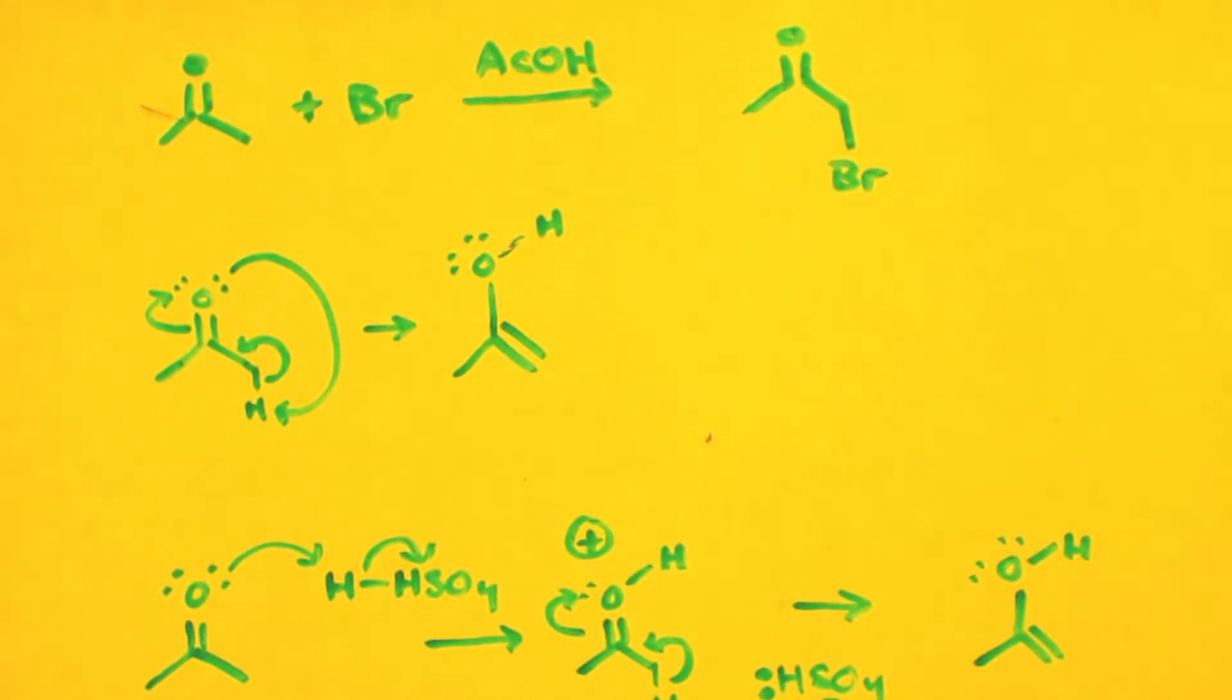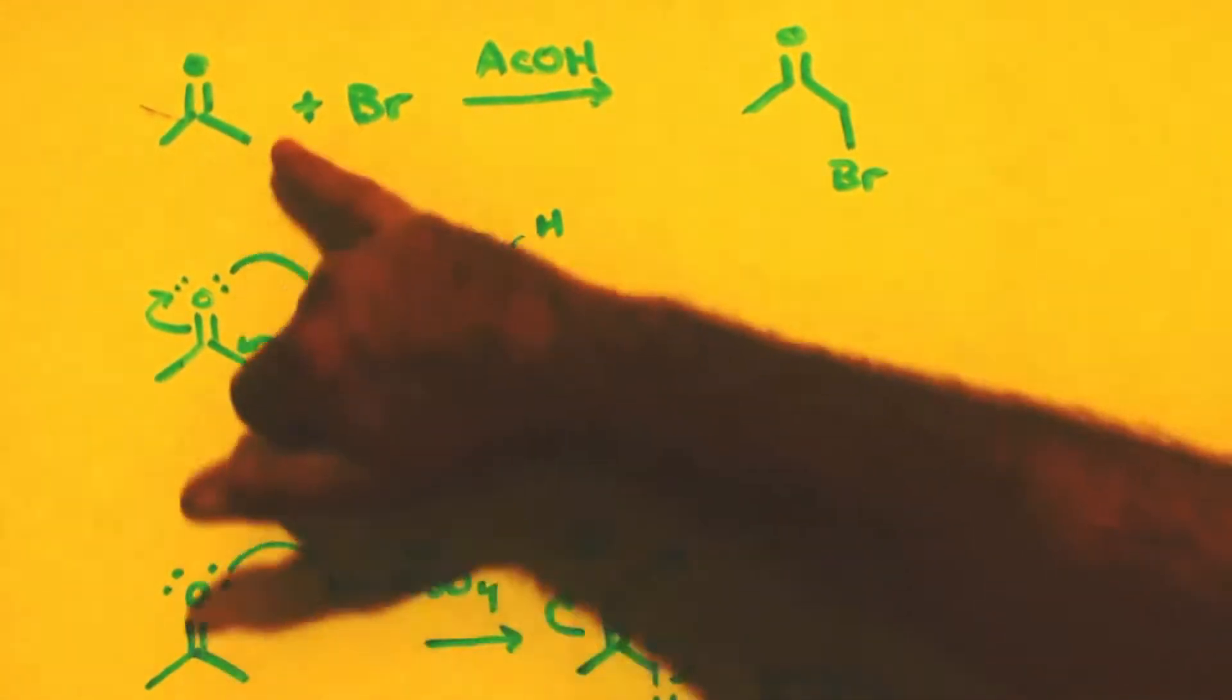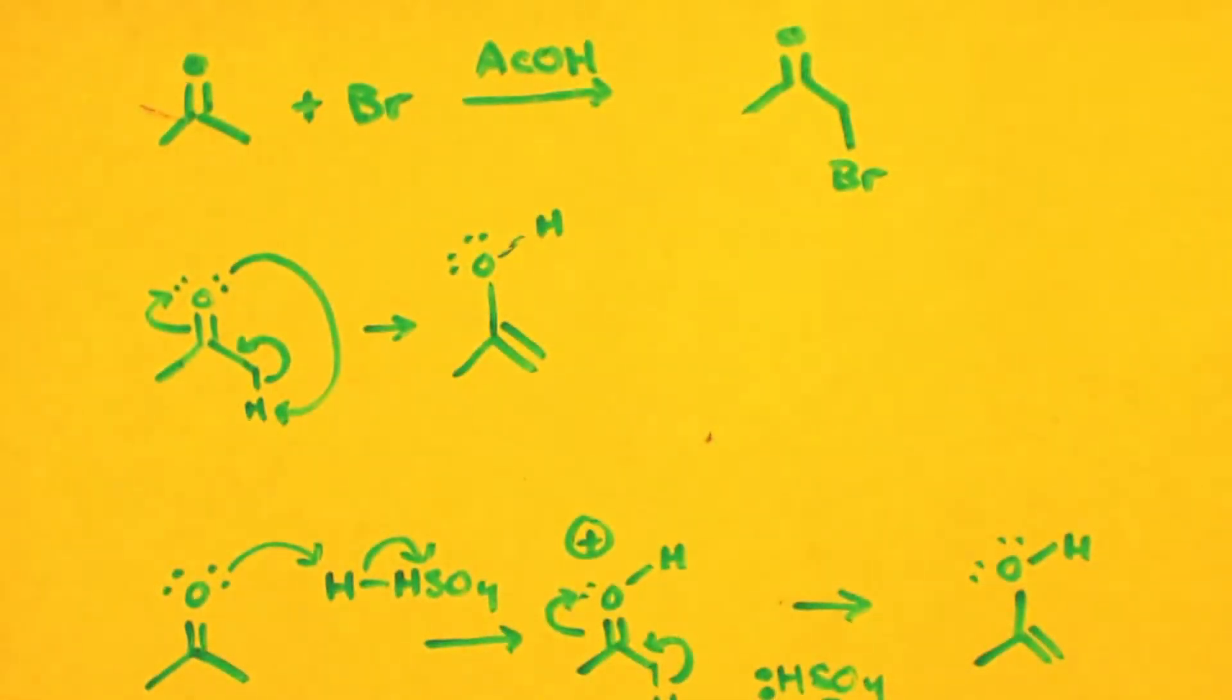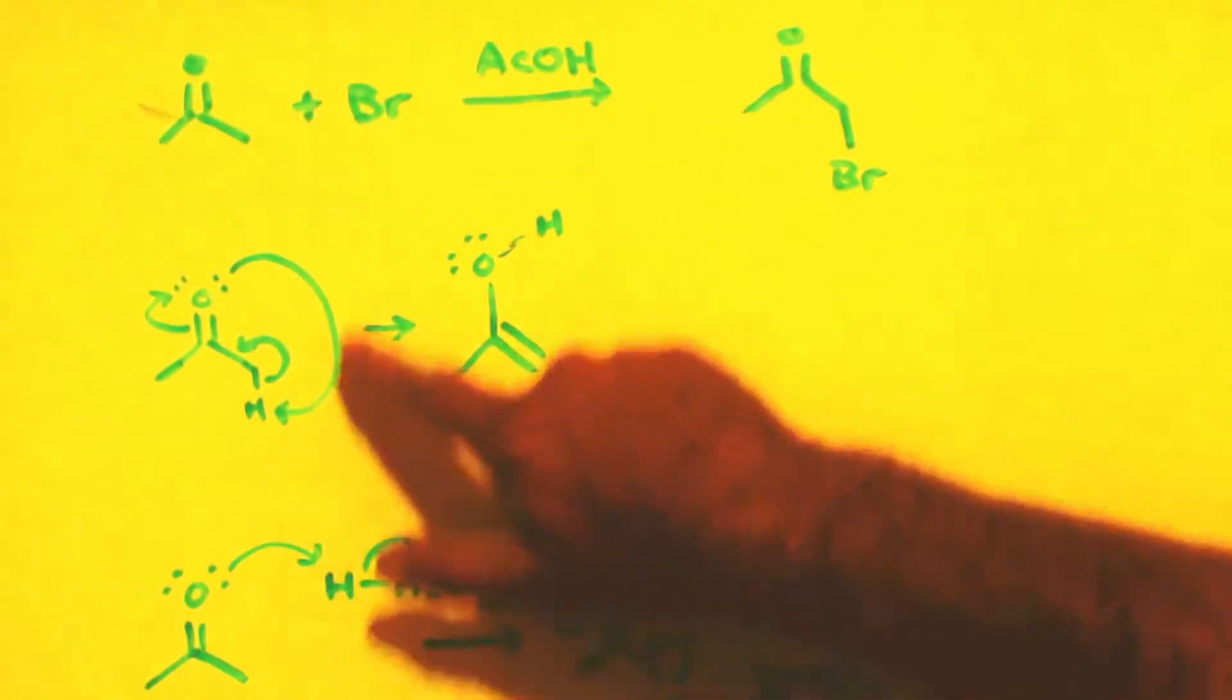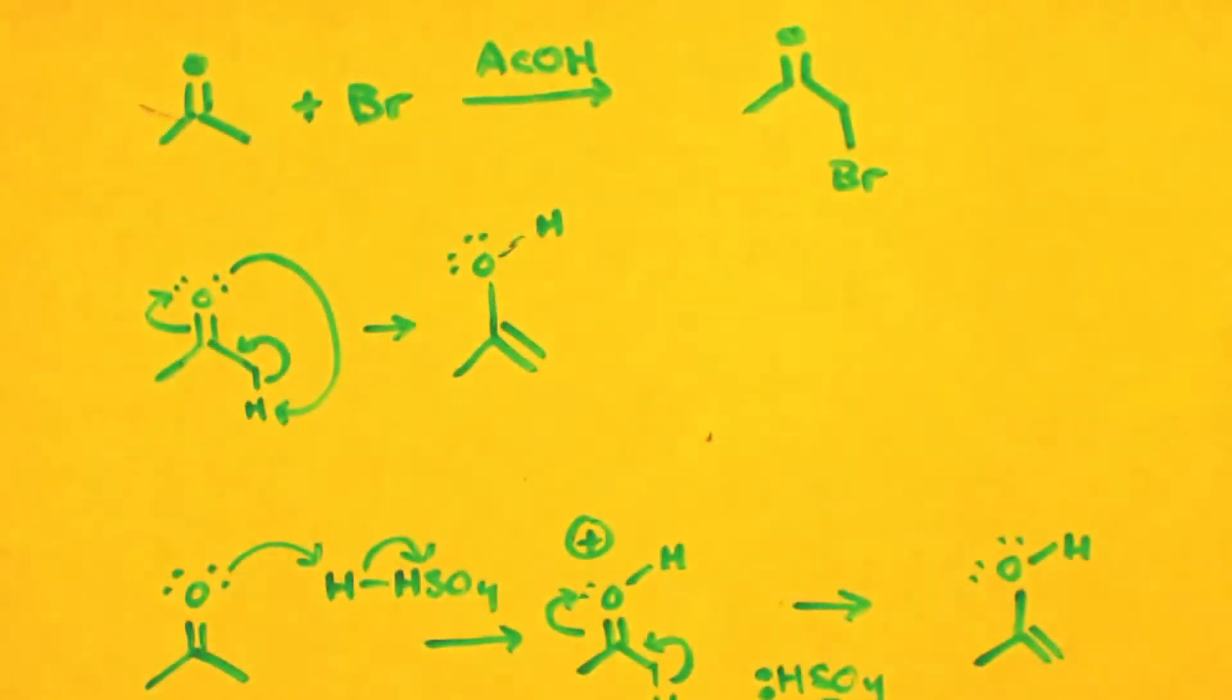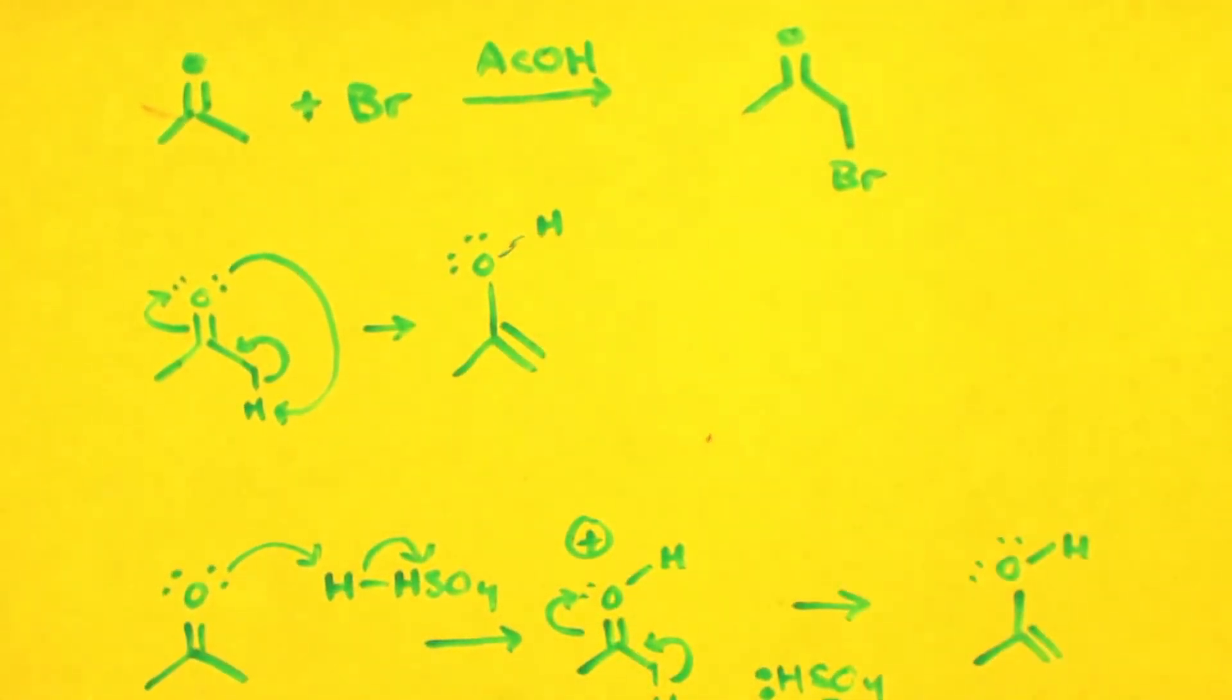Now how does this happen? All ketones tautomerize into enols. Here's an example of it. You can think of it as an internal thing where this hydrogen down here jumps up on the oxygen and makes an alcohol and the double bond is split down here. Actually the electrons here go to here and these electrons would go down and make the double bond. This double bond would go up on top of there. So you have a neutral enol because it's an alkene and an alcohol, an enol.